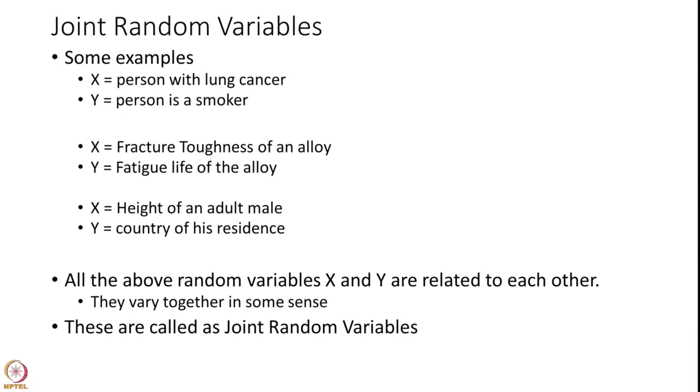We are going to discuss two joint random variables, but we should remember it is not necessary to have only two — we may have three, four, or more joint random variables, and the theory is more or less the same. We will start with two jointly distributed random variables, and the generalization will be left to you as it follows naturally.